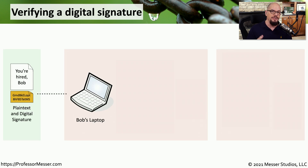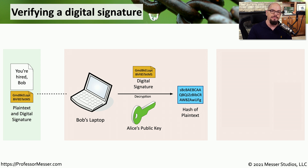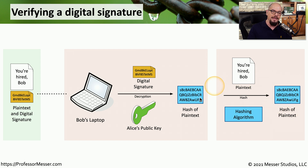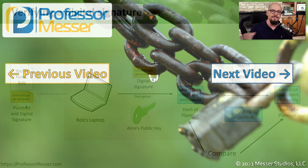On the other side, Bob has received the message from Alice: 'You're hired, Bob.' The message was not encrypted — a digital signature was simply created and attached. To verify the digital signature, Bob reverses the process Alice used. He uses Alice's public key to decrypt the digital signature, which is simply an encrypted version of the hash. After decryption, Bob is left with the hash of the plain text. He then runs the plain text 'You're hired, Bob' through the same hashing algorithm Alice used to produce his own hash, and compares the two hashes. If those hashes match, he knows the message is legitimate, it really did come from Alice, and nothing has been changed while the message was in transit.